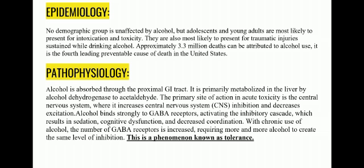Coming to the pathophysiology of alcohol: alcohol is absorbed through the proximal GI tract and is metabolized in the liver by alcohol dehydrogenase enzyme to acetaldehyde. The primary site of action in acute toxicity is the CNS, where it increases CNS inhibition and decreases excitation, which may result in lethargy and other conditions. Alcohol binds strongly to GABA receptors, activating the inhibitory cascade, resulting in sedation, cognitive dysfunction and decreased coordination. In chronic use, the number of GABA receptors increases, requiring more and more alcohol to create the same level of inhibition, a phenomenon known as tolerance.